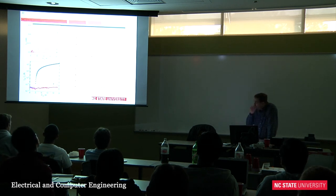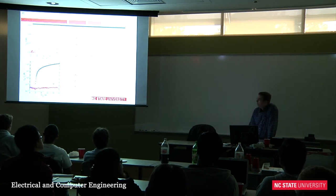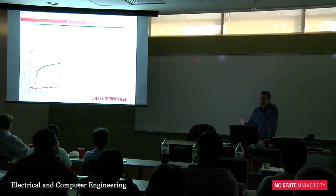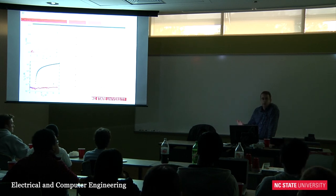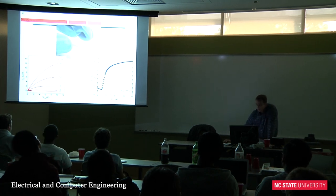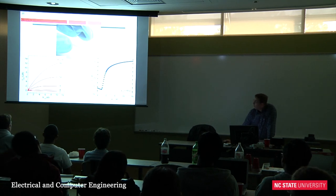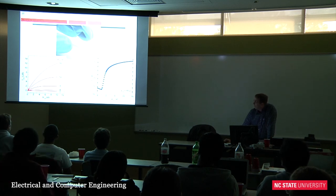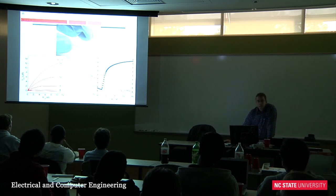The important takeaways are: you really do get something that's transparent, and you really do get a transistor that you ought to be able to design circuits out of. The third point is that if you want to put it on plastics, you can get essentially as good a transistor putting it on a plastic substrate - this is a material called PET - with very similar characteristics.